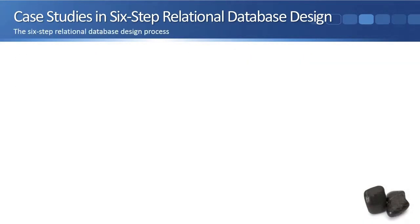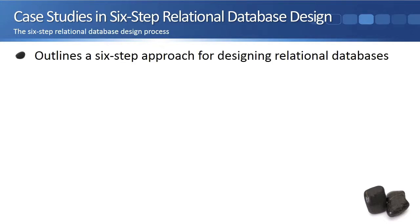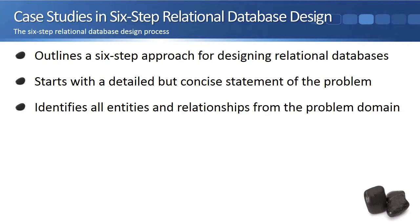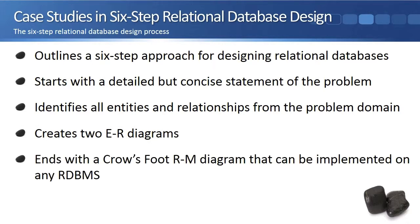The six-step relational database design process outlines a six-step approach for designing relational databases. This approach starts with a detailed but concise statement of the problem, goes through identifying the entities, the relationships between these entities, two ER diagrams, and finally produces a crow's-foot RM diagram that can be implemented on any RDBMS.